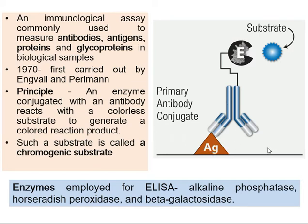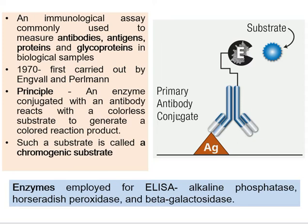Suppose there was no antigen in the sample — there will be no binding of the antibody, and in washing, all the antibodies would be washed away. But since this sample contains this antigen, the primary antibody will come and bind to it. Now we want to see the presence of the antibody there, but unfortunately this antibody is not a color-generating antibody. So how can you detect the presence of this antibody? Even after washing, if the antibody remains, that means the antigen is there in the sample.